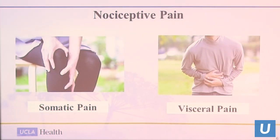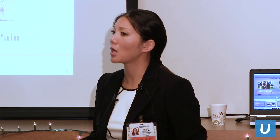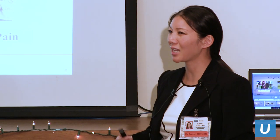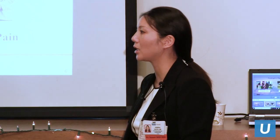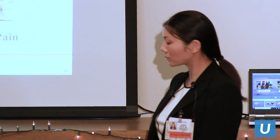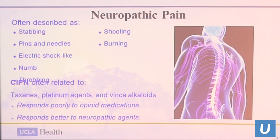Nociceptive pain can be divided into somatic and visceral pain. Somatic pain is well-localized — you can point to it with one finger; it's usually sharp. Visceral pain, seen with intra-abdominal malignancies like pancreatic cancer or liver metastases, is very diffuse — you feel abdominal pain that's aching and cramping and you can't quite point to it. It's still nociceptive pain but we call it visceral pain.